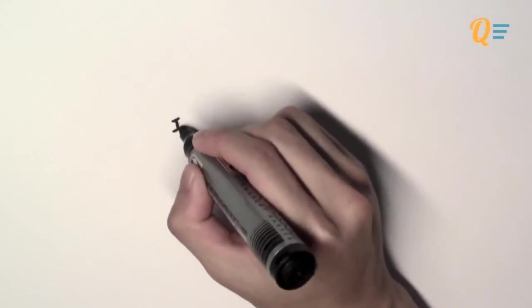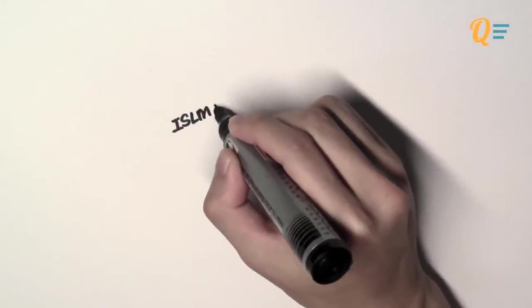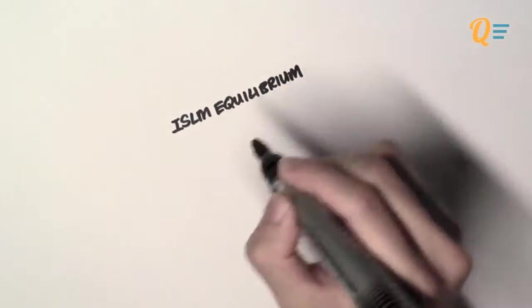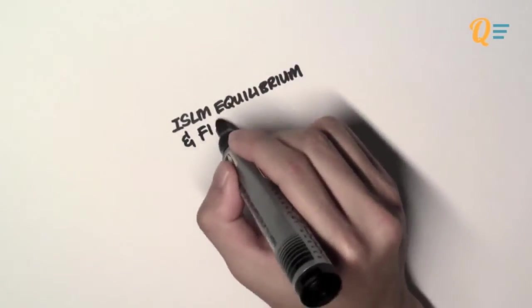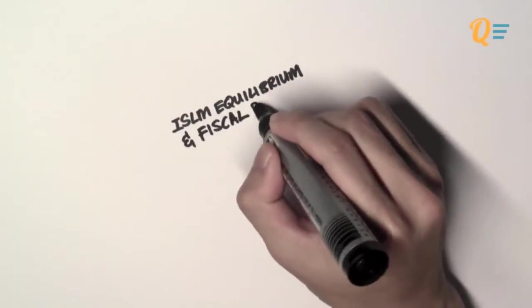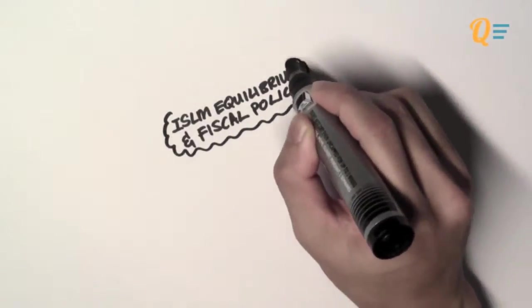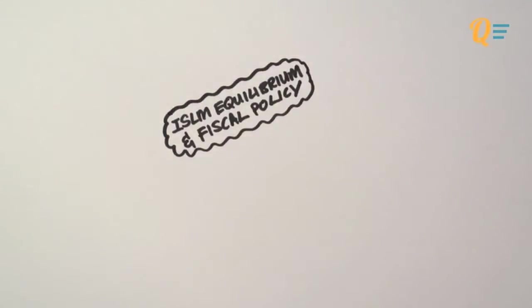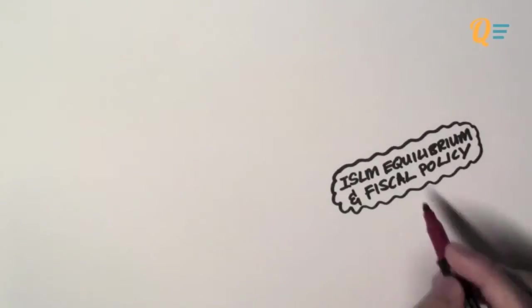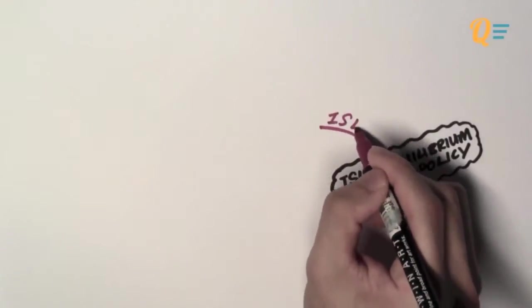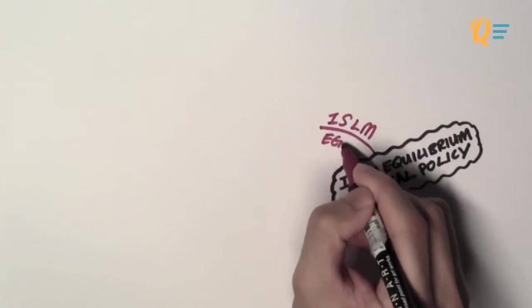All right, new chapter. So what we're going to do today is to take what we have learned in the previous videos and combine them to get the IS-LM equilibrium. We are also going to talk about fiscal policy. So let's begin by talking about how the IS-LM equilibrium is established.